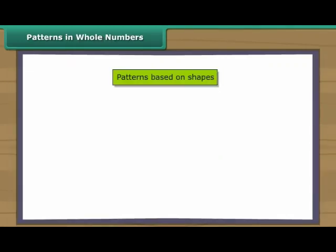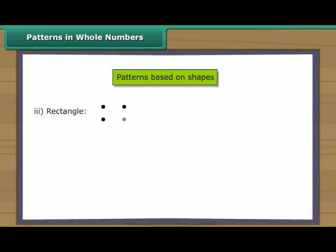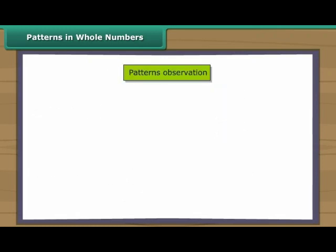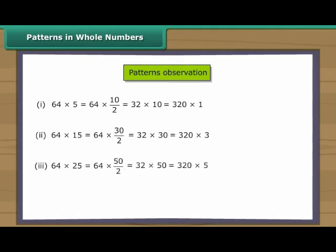Patterns in whole numbers. Numbers can be arranged in some elementary shapes using dots. The shape could be a line, square, rectangle, or triangle. Every number can be arranged as a line. Some numbers can be arranged as squares. Some numbers can be arranged as rectangles — which can be a horizontal arrangement or a vertical arrangement. Some numbers can be arranged as a triangle. Sometimes some kind of pattern is observed in whole numbers, which can help in simplifying the calculation process.